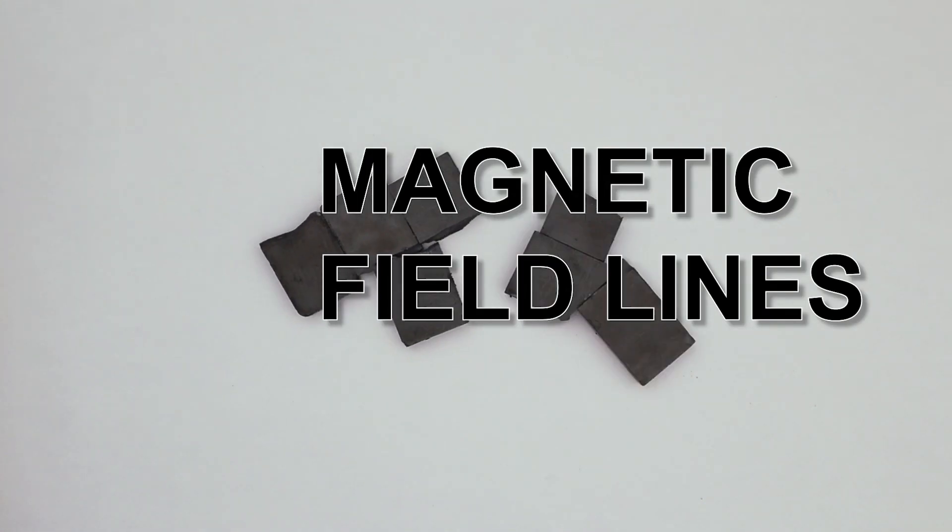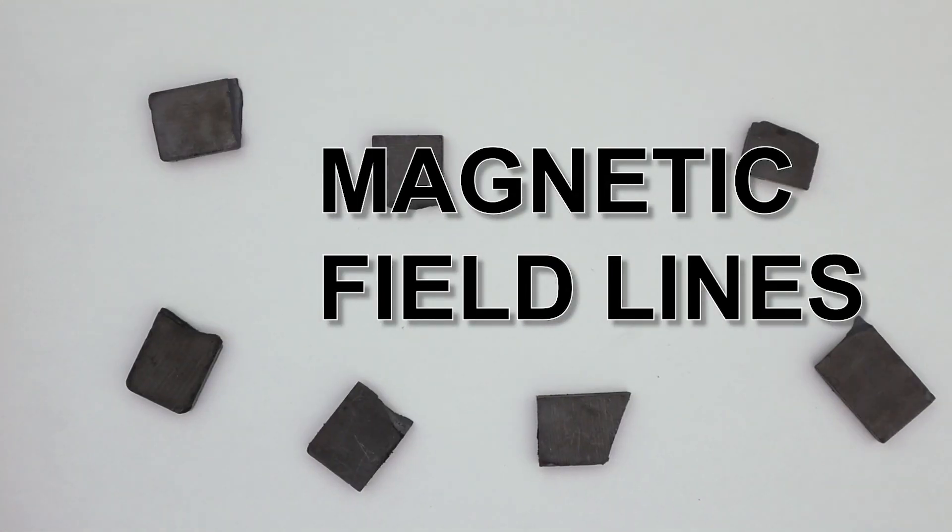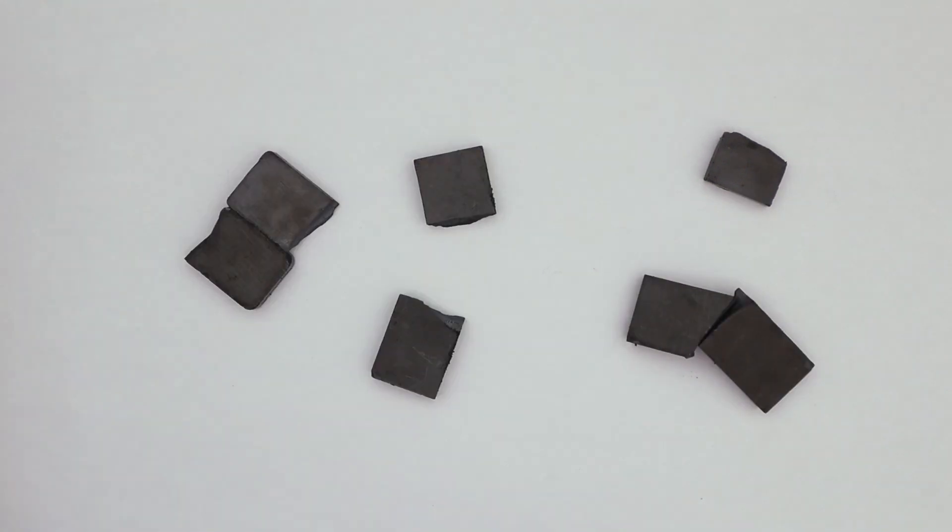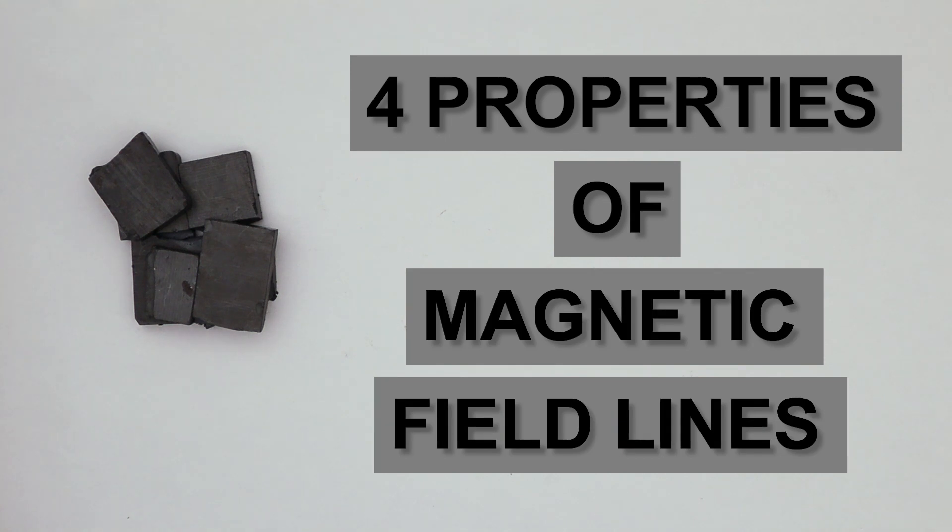It's probably safe to say that you have a very good idea of how the magnetic field of a bar magnet looks like. But do you know the four important properties of magnetic field lines?